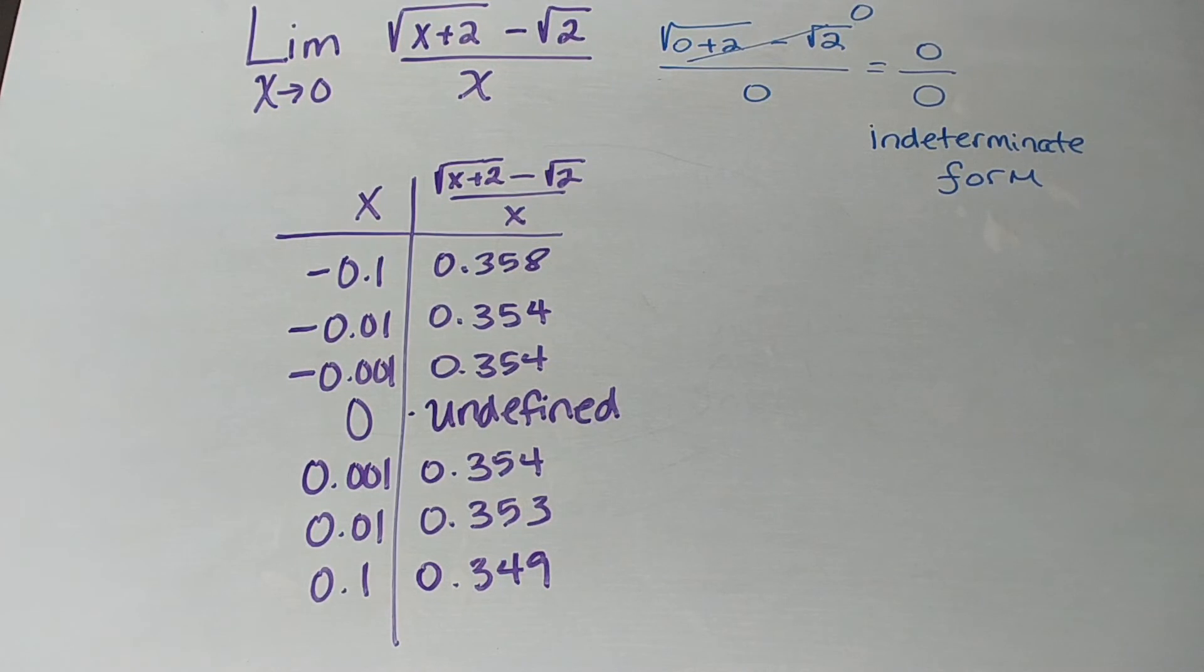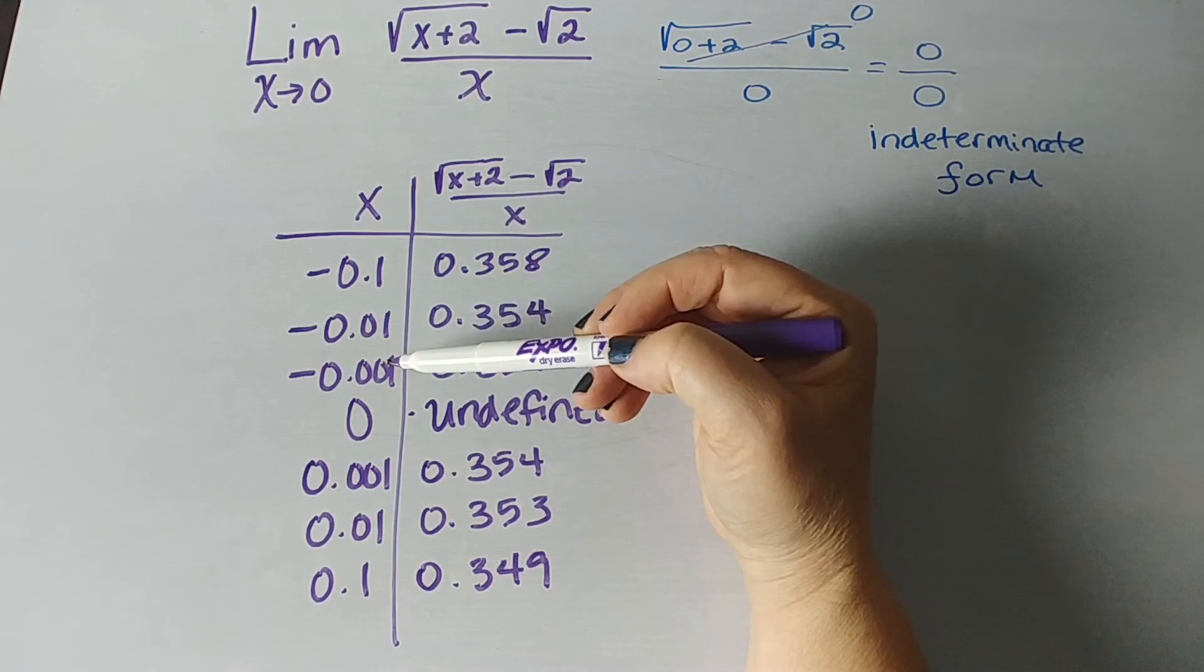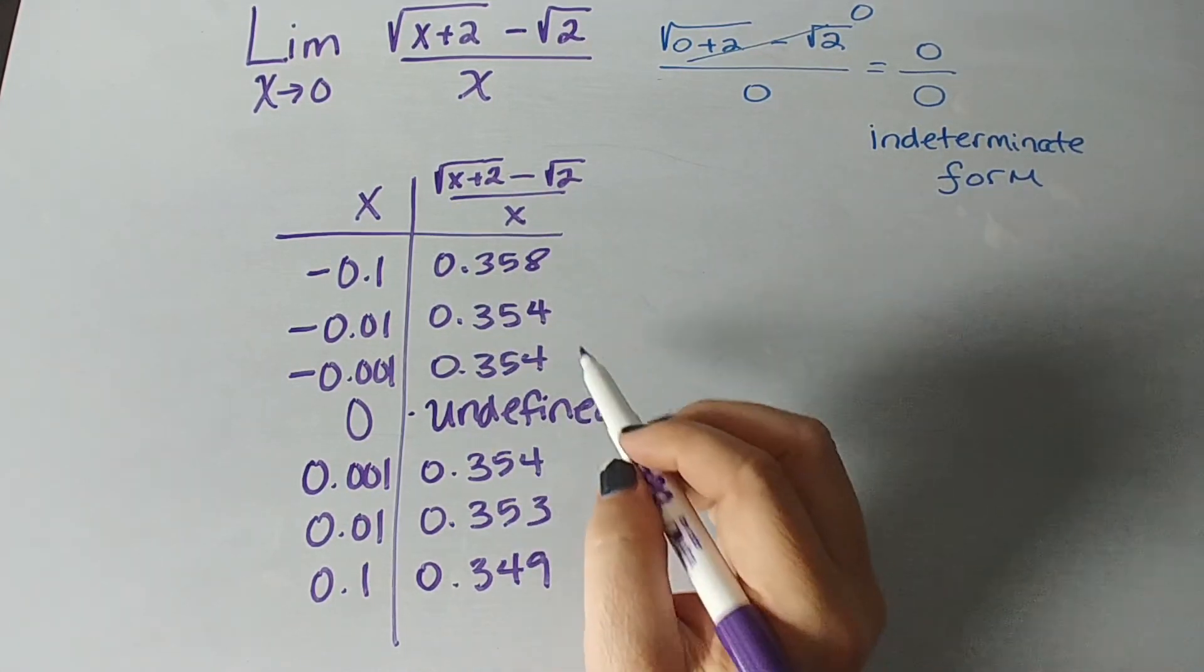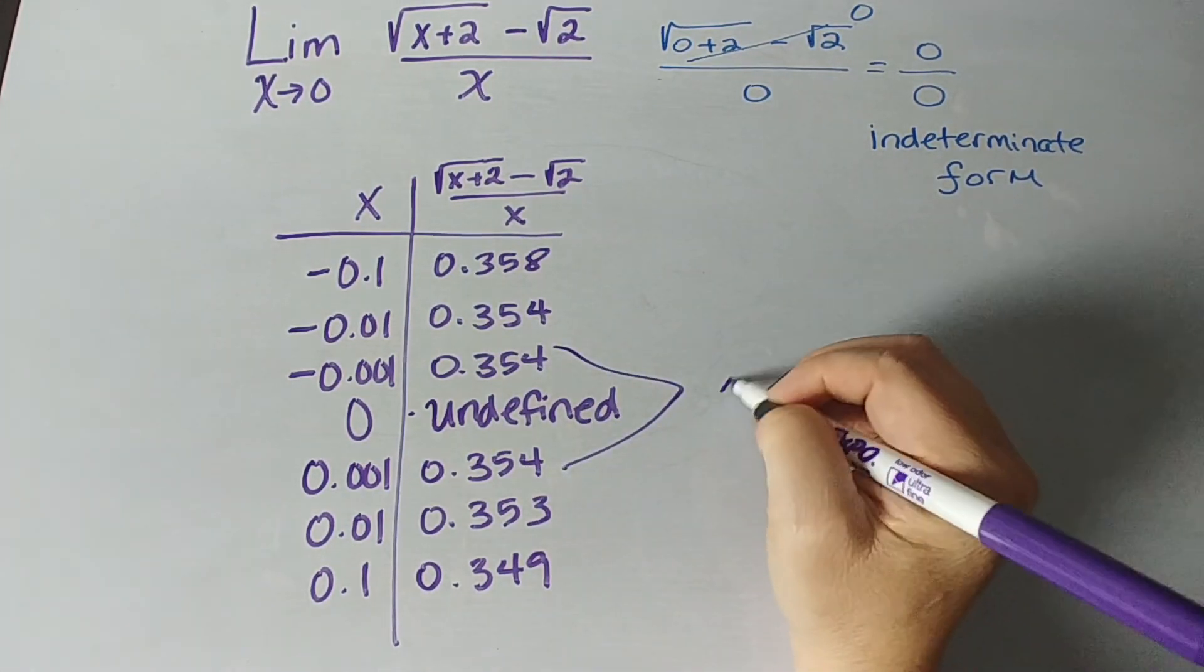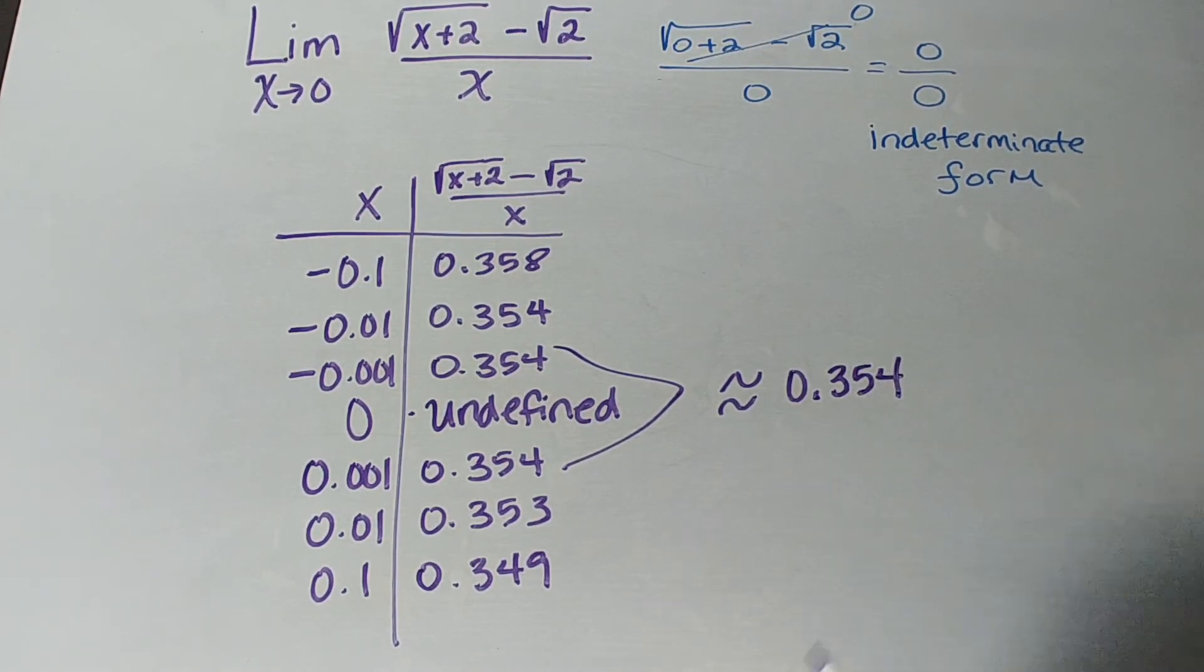so the positive direction, numbers bigger than 0, and from the left side, numbers smaller than 0, we are approximating, let's say, approximately approaching 0.354 or 354 thousandths.